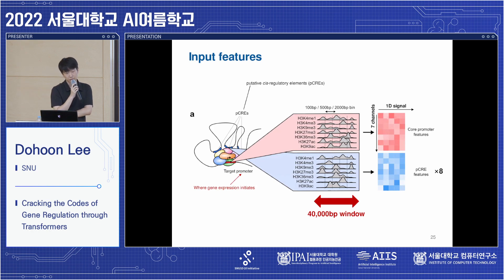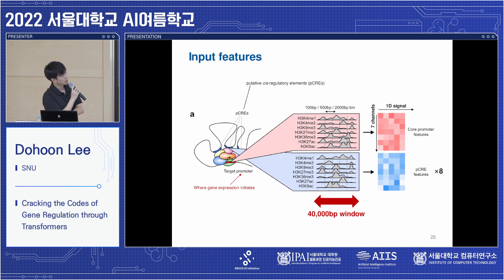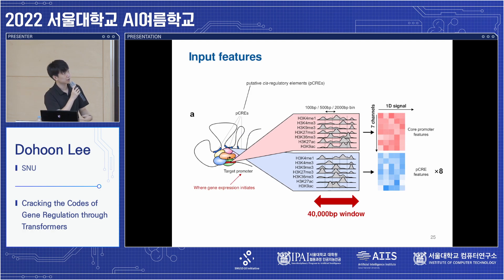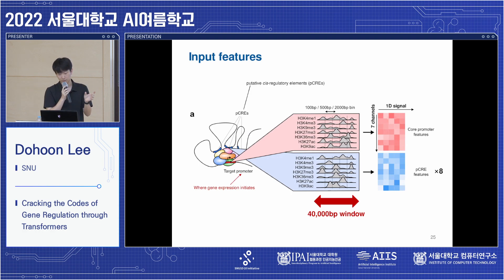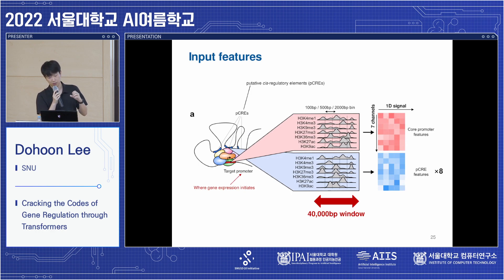Before diving into the model architecture, let me introduce the input features of this study. We use histone codes represented as a one-dimensional signal with seven channels, where each channel denotes a different type of histone modification. We use the histone code signals at target promoter regions where gene expression initiates and most gene regulation takes place. Additionally, we use histone code signals at CREs — cis-regulatory regions — at most eight cis-regulatory regions.